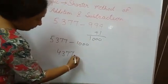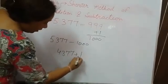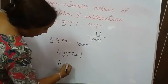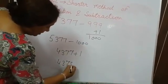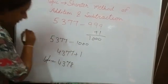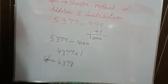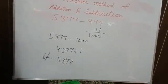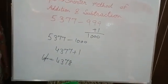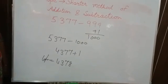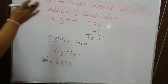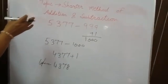Now plus 1, you get 4,378. So your answer is 4,378. Today your homework is to do practice of shorter method of addition and subtraction.